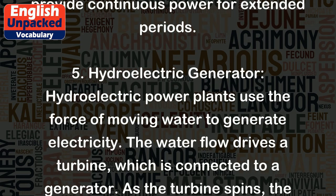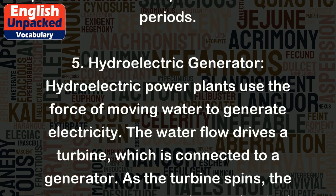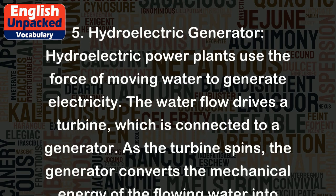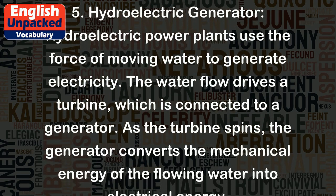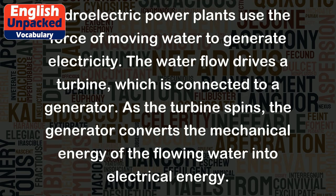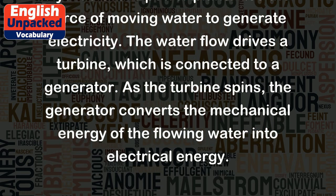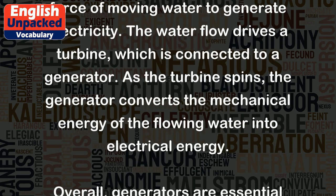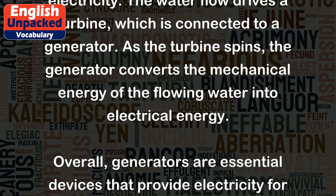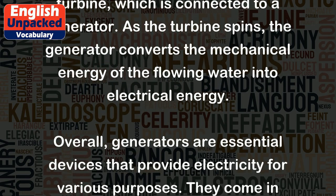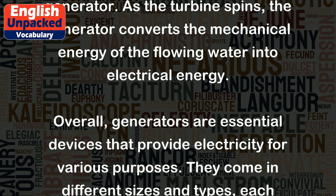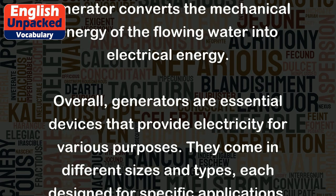Hydroelectric power plants use the force of moving water to generate electricity. The water flow drives a turbine, which is connected to a generator. As the turbine spins, the generator converts the mechanical energy of the flowing water into electrical energy.